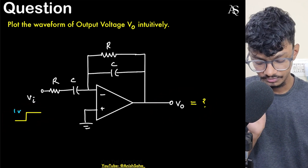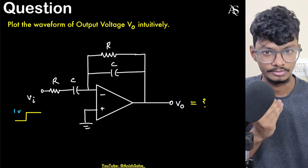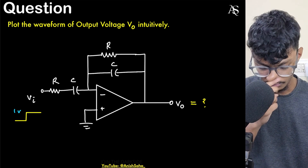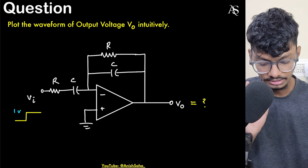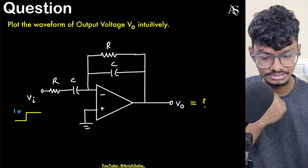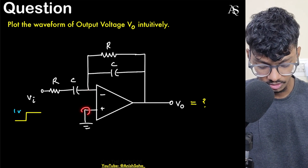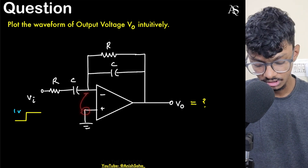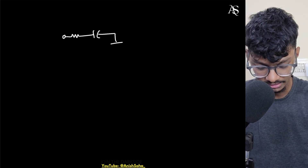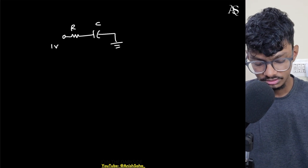The first thought that should come to mind is: is the virtual ground concept applicable or not? It is applicable because the op-amp is ideal, input resistance is infinite, there are no saturation voltages, and there is proper negative feedback with no positive feedback. So since the virtual ground concept is applicable, I can redraw this circuit — this ground comes here as virtual ground. So I can redraw this with R in series and a virtual ground, and this is the input voltage one-volt step.